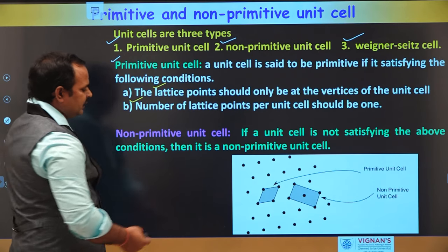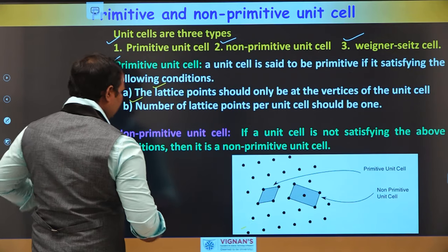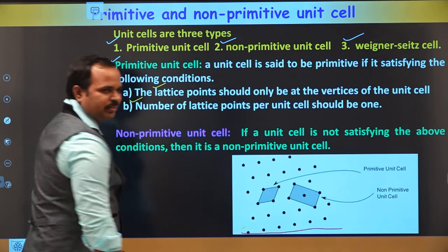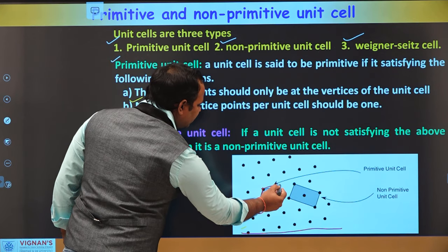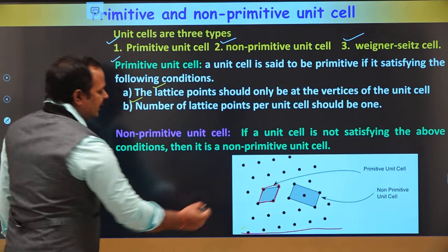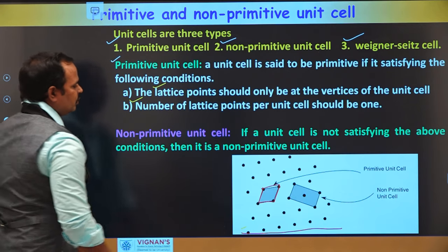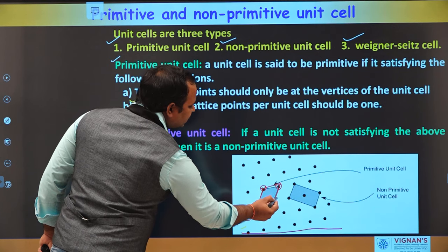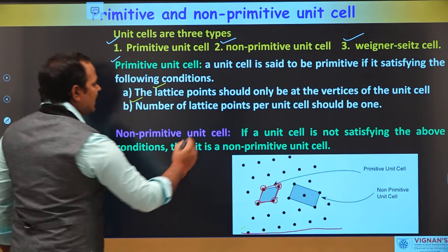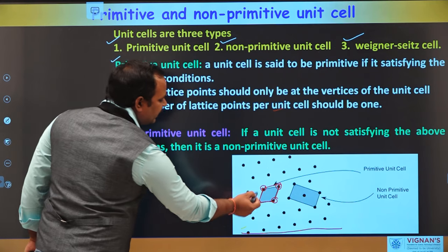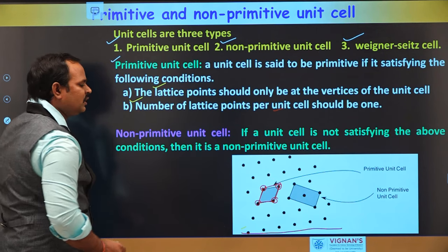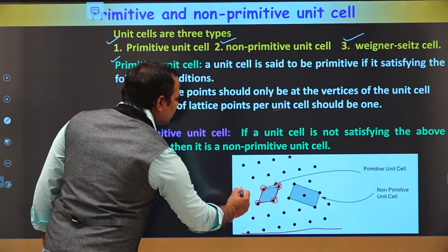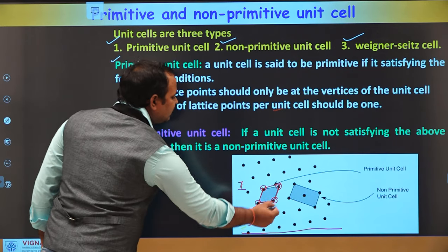Let's see what this means. This is a two-dimensional lattice where the points are arranged regularly and periodically. Let's connect these points and see if this unit cell is primitive or non-primitive. As per the definition, the lattice points are only at the vertices of the unit cell. And each lattice point contributes 1/4, so the number of lattice points per unit cell is 1. Therefore, this unit cell is a primitive unit cell.